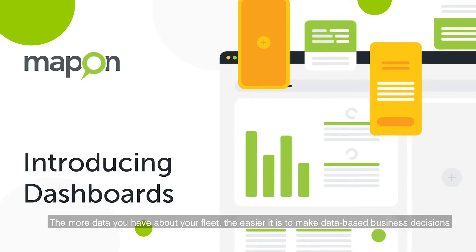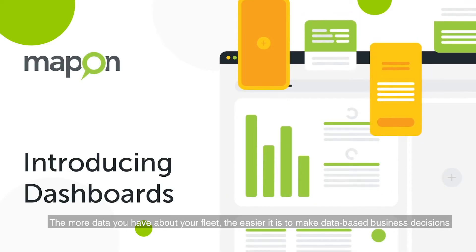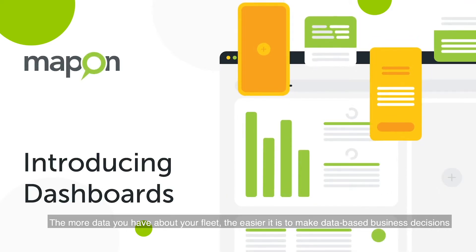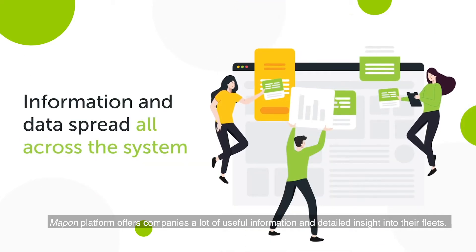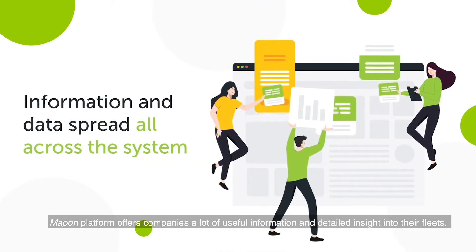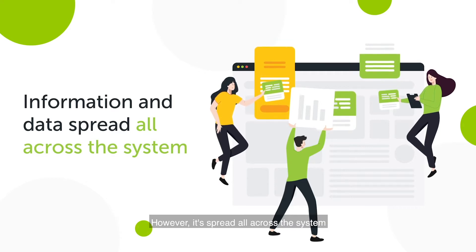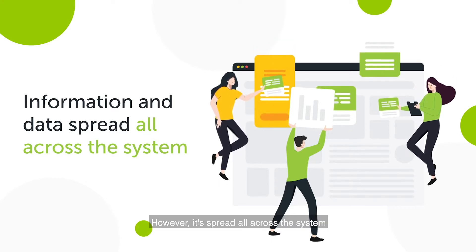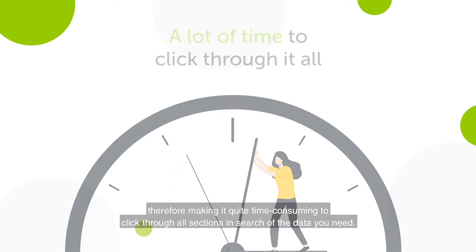The more data you have about your fleet, the easier it is to make data-based business decisions. Map On Platform offers companies a lot of useful information and detailed insight into their fleets. However, it's spread all across the system, therefore making it quite time-consuming to click through all sections in search of the data you need.